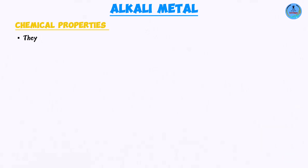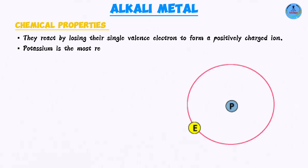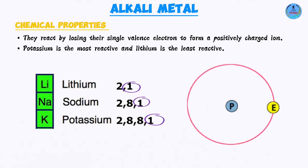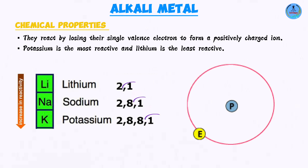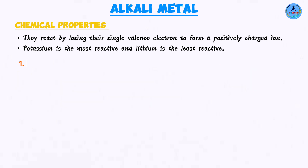Now let us proceed to the chemical properties. When alkali metals react, they lose their single valence electrons. All alkali metals react by losing their valence electrons. Out of lithium, sodium, and potassium, potassium is the most reactive because it most readily loses its valence electrons.